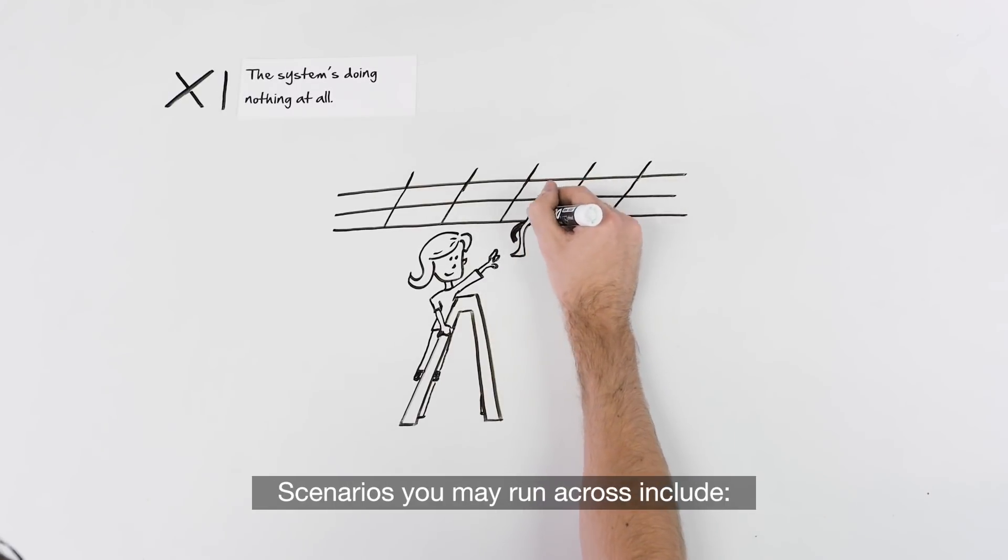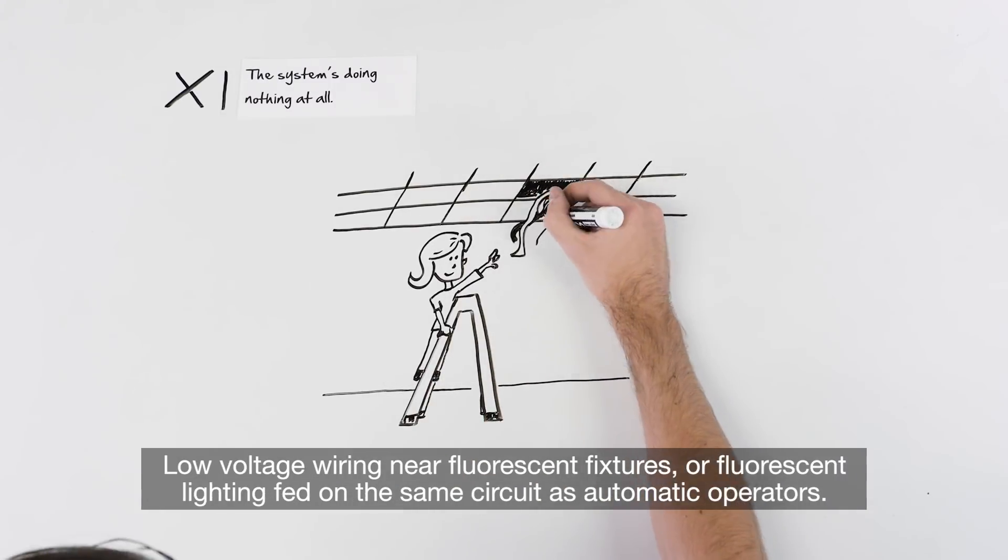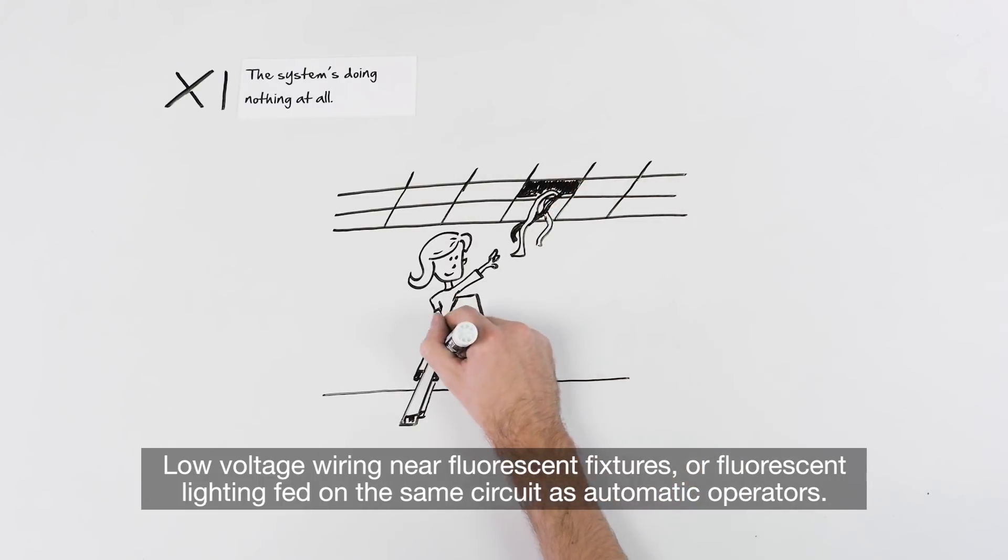Scenarios you may run across include high voltage and low voltage wiring too close together, low voltage wiring near fluorescent fixtures, or fluorescent lighting fed on the same circuit as automatic operators.